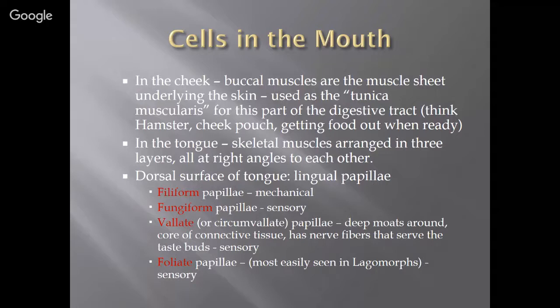In the tongue, skeletal muscles are arranged in three layers, all at right angles to each other — going upwards, downwards, and side to side. Your tongue is one of the strongest muscles in your body. In order to be strong and move in the way needed to speak, the muscles are arranged in different directions.